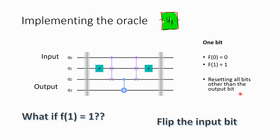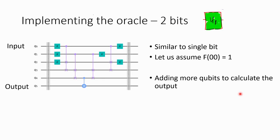Now we have a solution for one bit. Let us see how we solve for two bits. Implementing the oracle or f(x) for two bits is very similar to the single-bit case. Let us assume in our two-bit implementation the goal is located at 00. As you have seen, implementing 00, 01, 10, 11 are all similar — you just flip the particular bit with one.